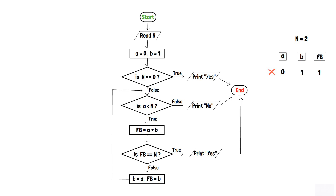Therefore a is changed to 1 and b remains 1. The second decision box checks again: since 1 is less than 2, the condition is true, so fb equals 1 plus 1, which is 2. Since fb (which is 2) equals n (which is also 2), the condition in the last decision box is true. As a result, our program prints yes and terminates. Thank you.